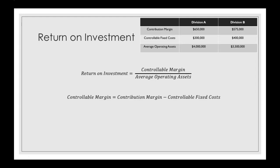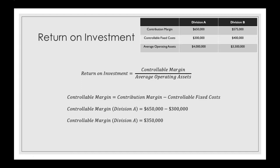For Division A, we take the contribution margin of $650,000 and subtract out the controllable fixed costs of $300,000. The controllable margin for Division A is $350,000.